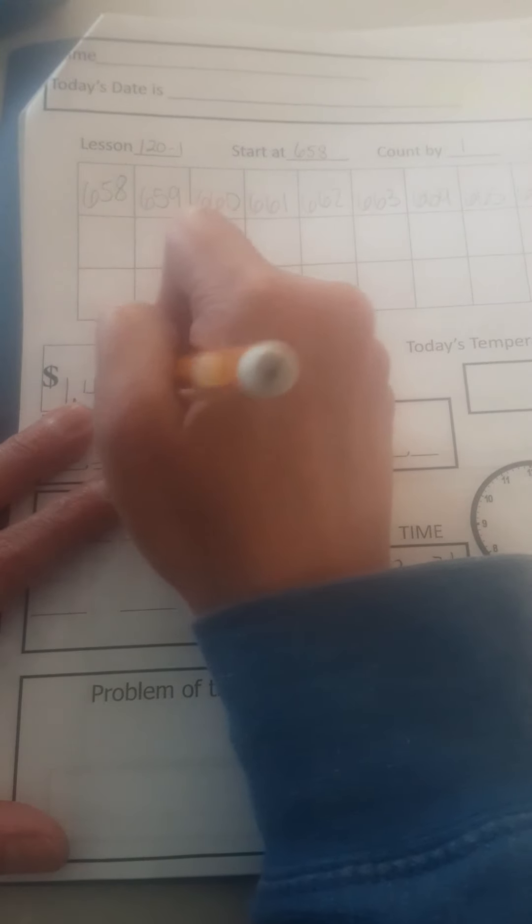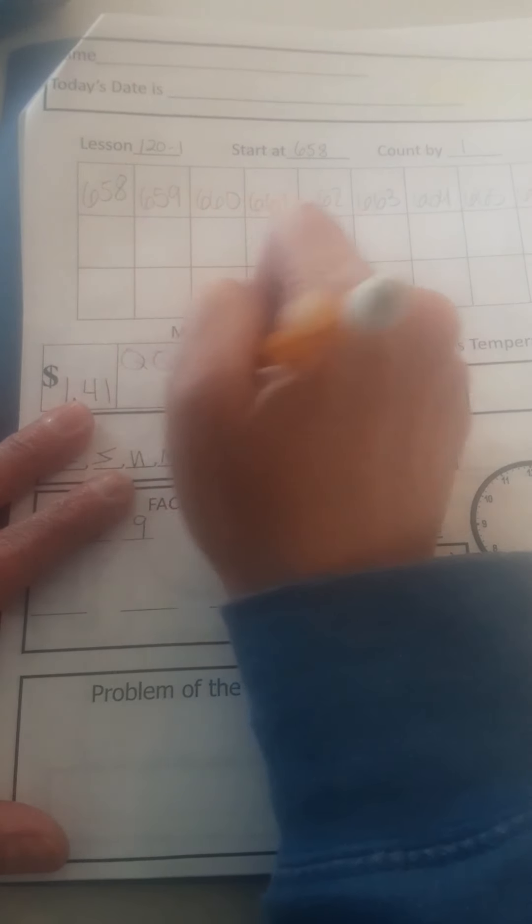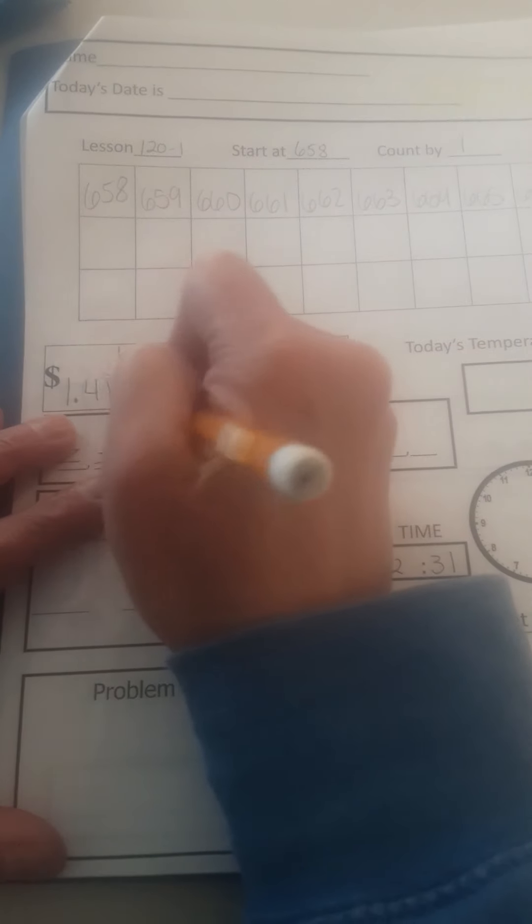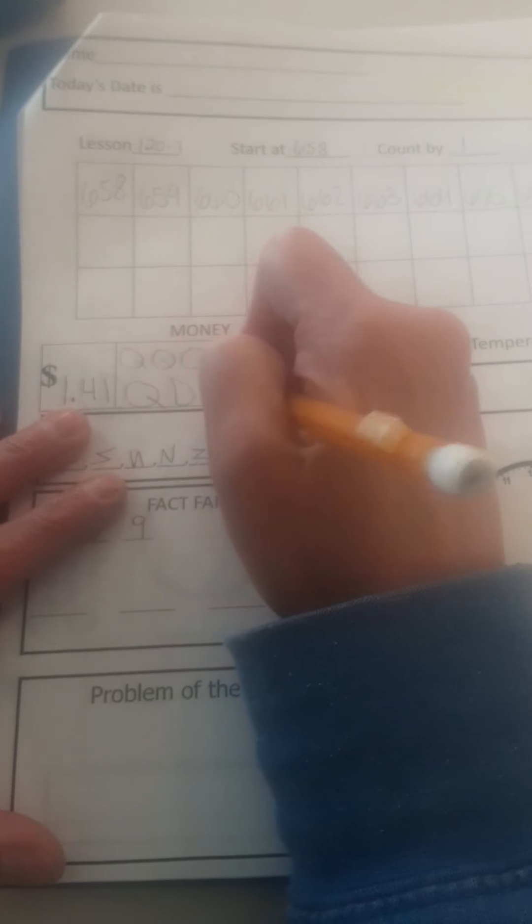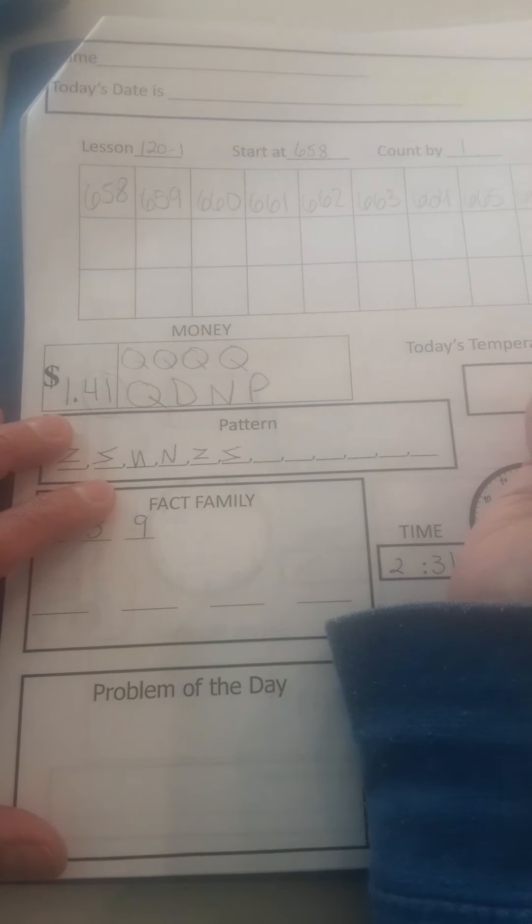I have four quarters makes a dollar. Now I need 41 cents. Well, I could do a quarter, 25, a dime, 35, a nickel, 40, and a penny, 41 cents.